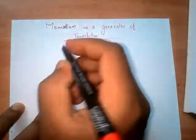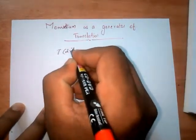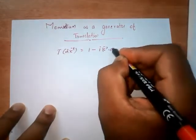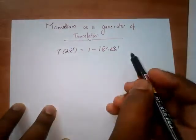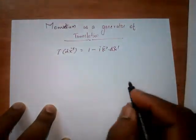The translation operator is in the form of T(dx') = 1 - ik·dx'. This satisfies all the properties of infinitesimal translation operator and we have adopted this as infinitesimal translation operator.